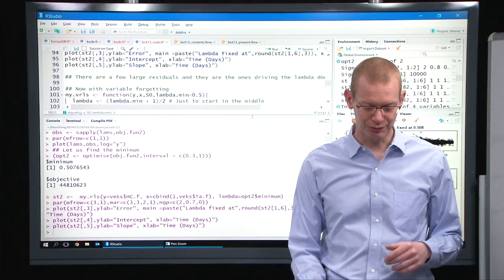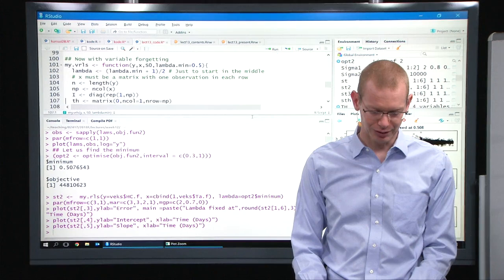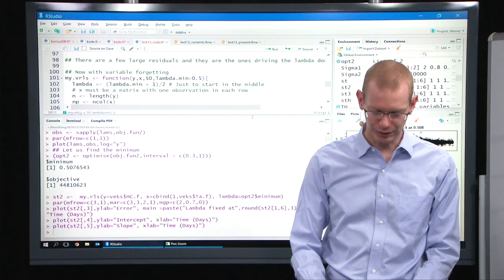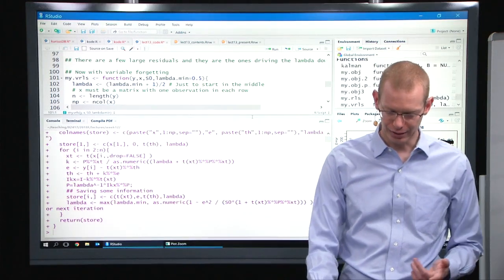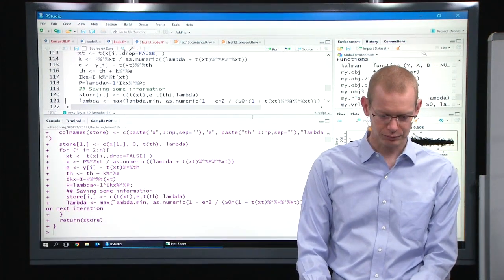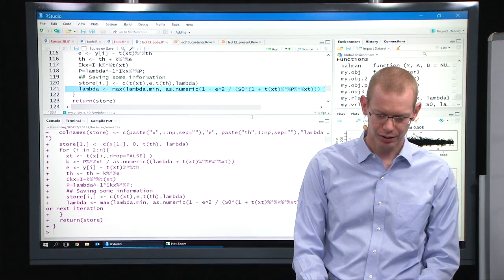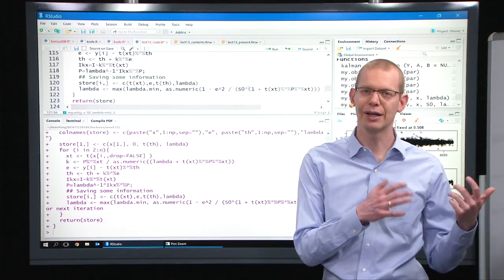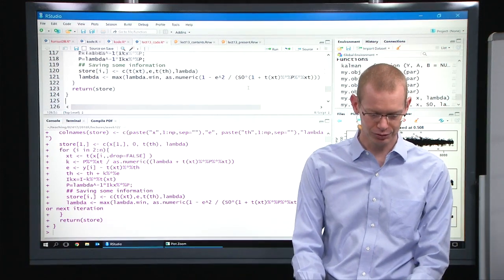One way to do things would be to have variable forgetting. So I will implement the same model as before, just with the forgetting factor as I include it. See where it is. We have the lambda down here. There's a minimum lambda, and then it's the equation from the slide, the simple solution to that.